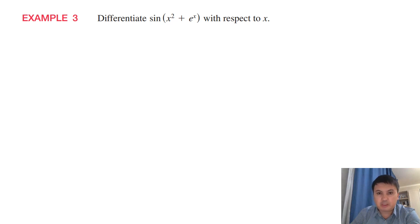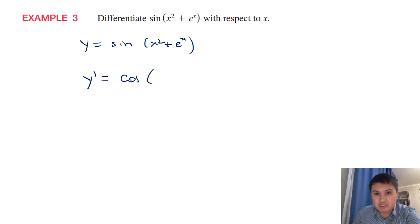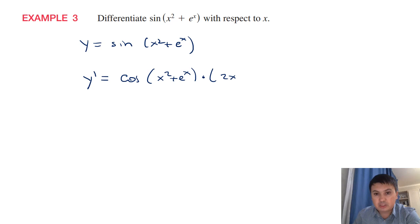Let's illustrate by differentiating sin(x² + eˣ) with respect to x. We could use Leibniz notation setting u = x² + eˣ, but instead let's apply the outside-inside rule. The outside function is sine, whose derivative is cosine. So y′ = cos(x² + eˣ) — the derivative of the outside evaluated at the inside — multiplied by the derivative of the inside, which is 2x + eˣ.